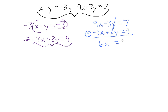We divide both sides by 6 to get our value for x, which is 16 over 6, or 8 over 3 after factoring out 2 from top and bottom. So x equals 8 over 3. We can plug this into the first equation to find y, since the variables there have a coefficient of 1.